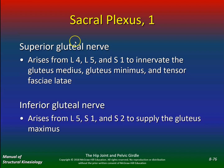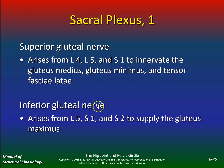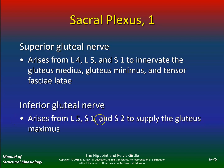The superior gluteal nerve arises from L4, L5, and S1, and innervates gluteus medius, gluteus minimus, and tensor fasciae latae. The inferior gluteal nerve — L5, S1 — innervates just gluteus maximus. This is a great test question: the difference between superior and inferior gluteal nerve.